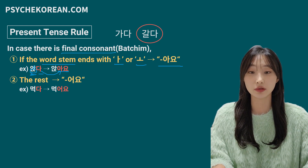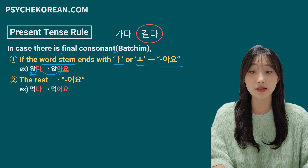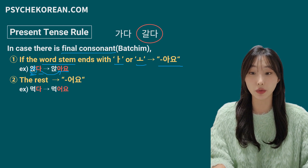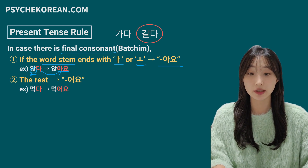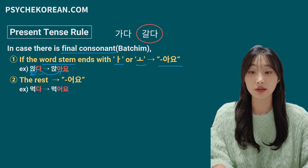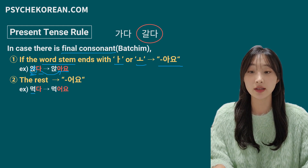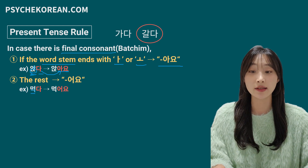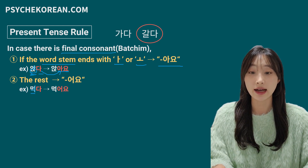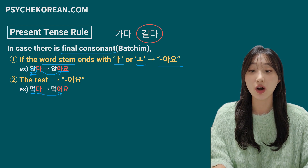The second rule is: for the rest of them, you just add 어요. For example, 먹다, which means 'eat.' 먹 has a final consonant and the vowel is not 아 and not 오, so 다 is conjugated to 어요.